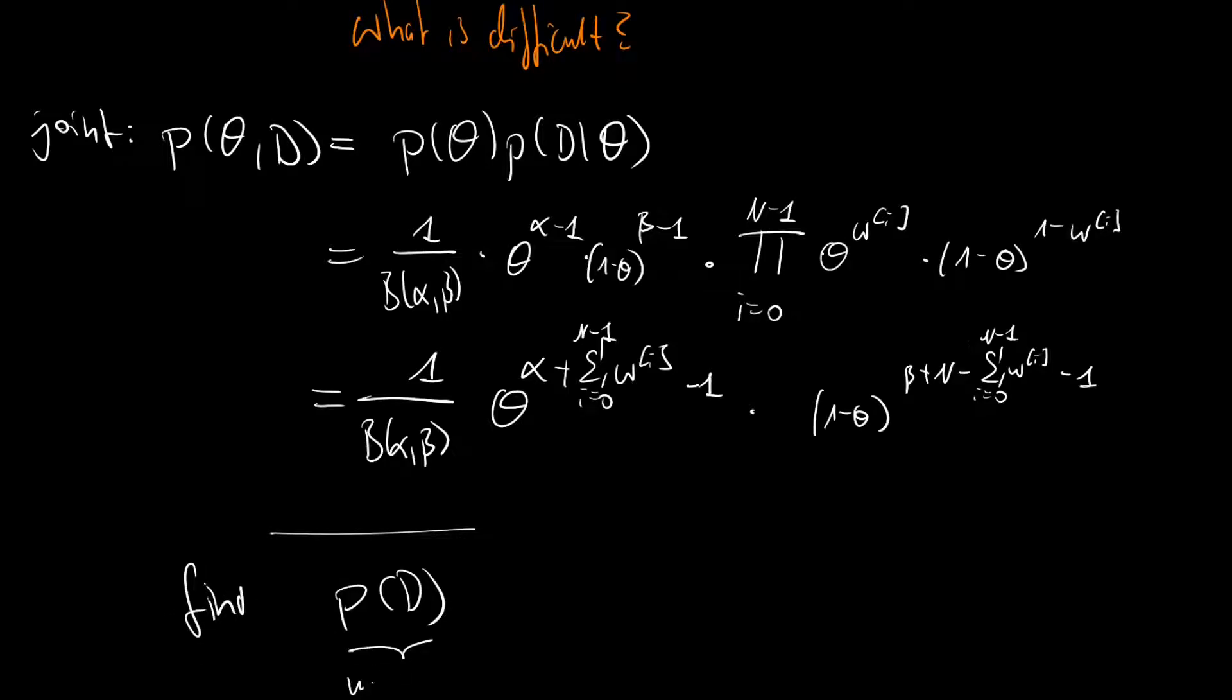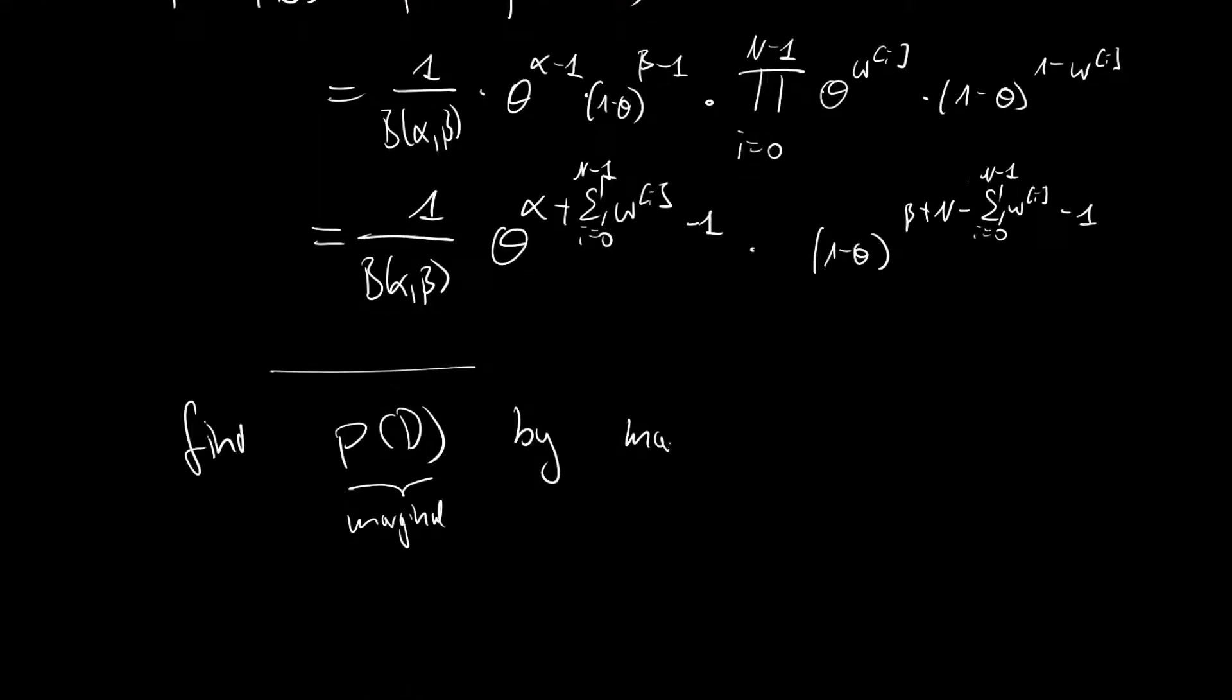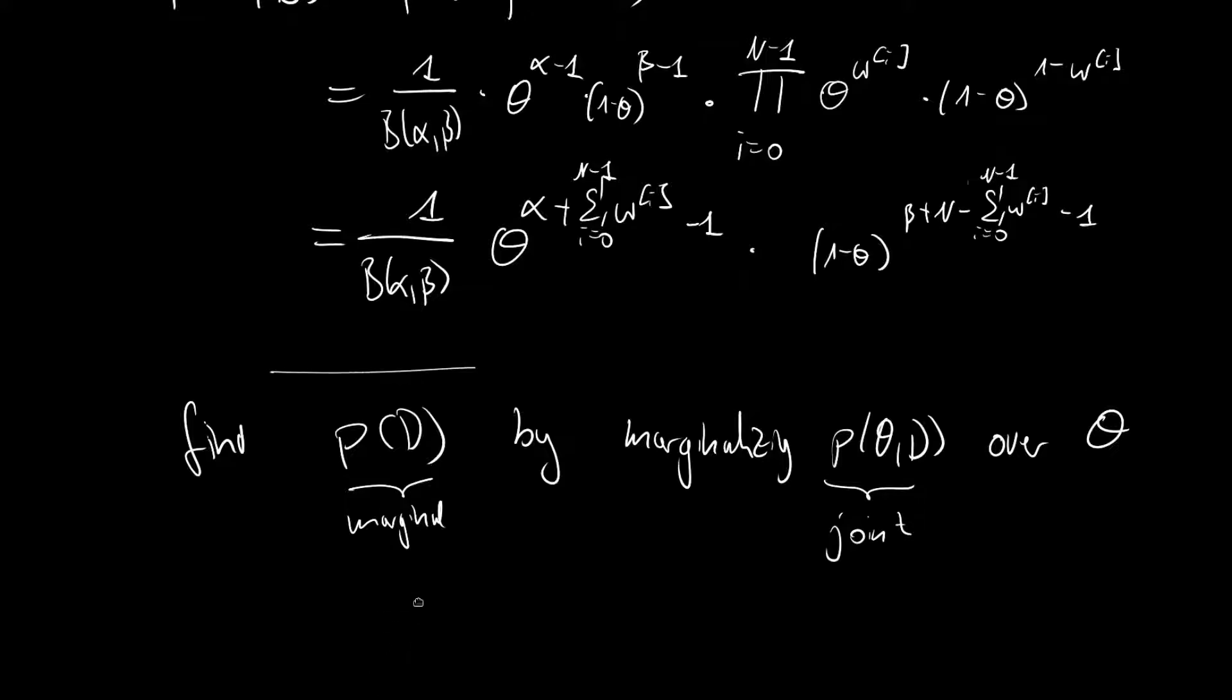So we find the marginal by marginalizing P of theta and D over theta. And this was our joint.